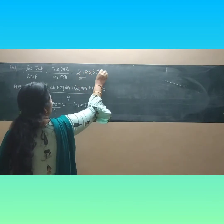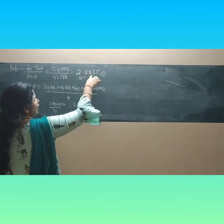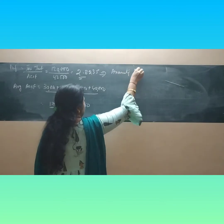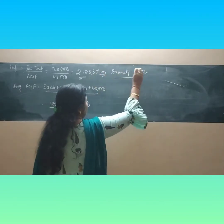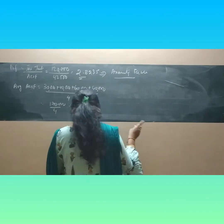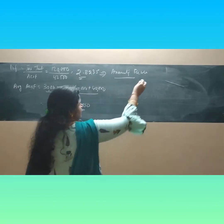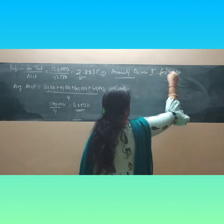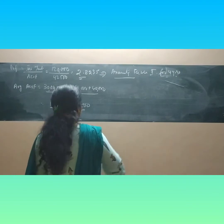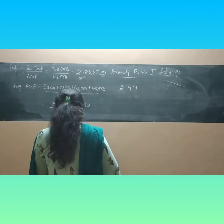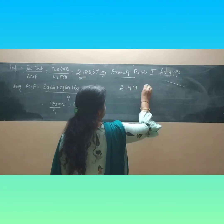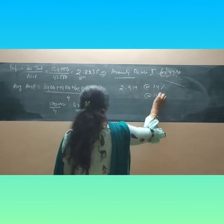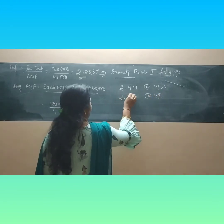Now I compute the present value factor: 1,20,000 divided by 42,500 equals 2.8235. I have to find where 2.8235 lies in the annuity table. Referring to the annuity table for 4 years, I find that 2.914 corresponds to 14%.